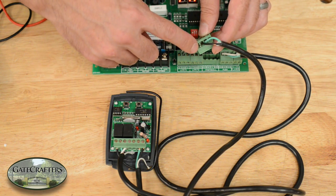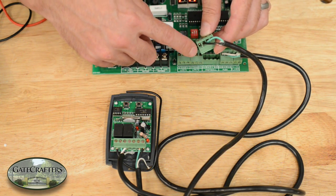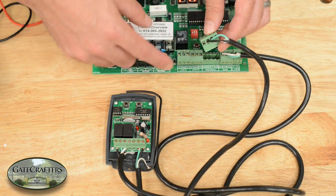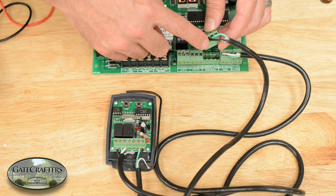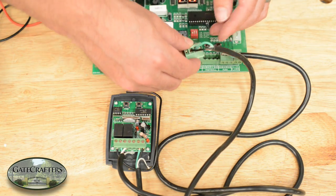Notice that the safety jumper is still in place. If you are not using a photo eye, you would have installed a safety jumper. You will leave the safety jumper in place on here.